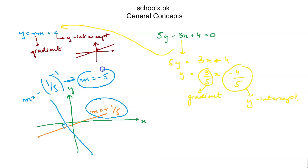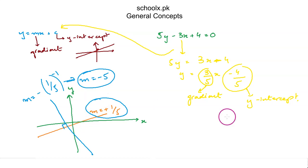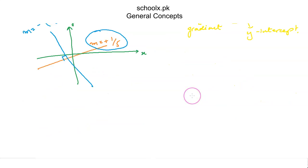So the gradient of the perpendicular line will be negative 5. The gradients of two perpendicular lines are the negative inverse, or negative reciprocal, of each other.